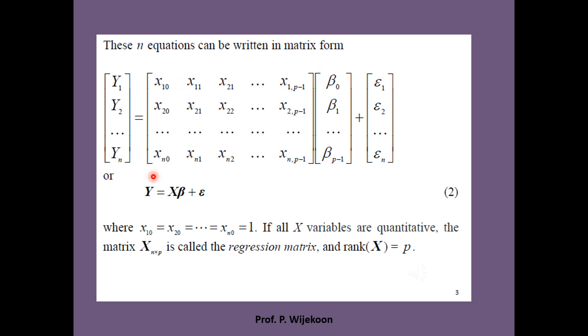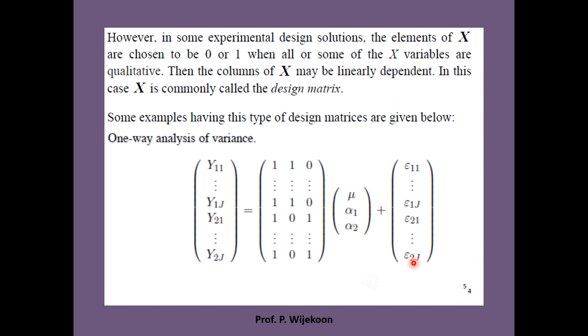Since in all equations, there is no x value corresponding to beta 0, the elements of the first column of matrix x should be equal to 1. If all x variables are quantitative, the matrix x having dimension n by p is called the regression matrix and rank of matrix x is assumed to be equal to p. Then we say that the matrix x is of full column rank matrix.